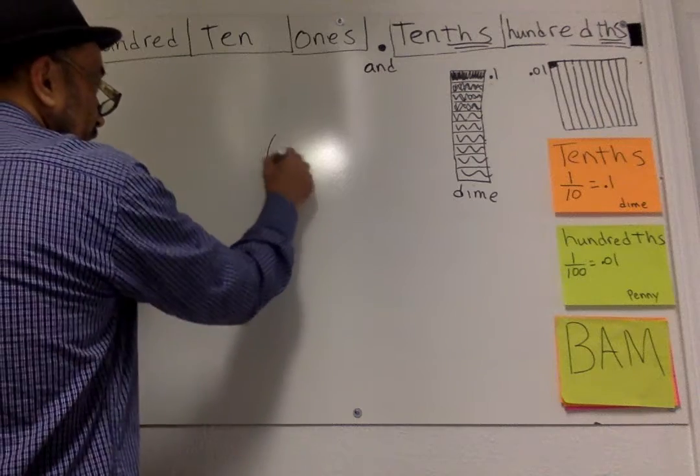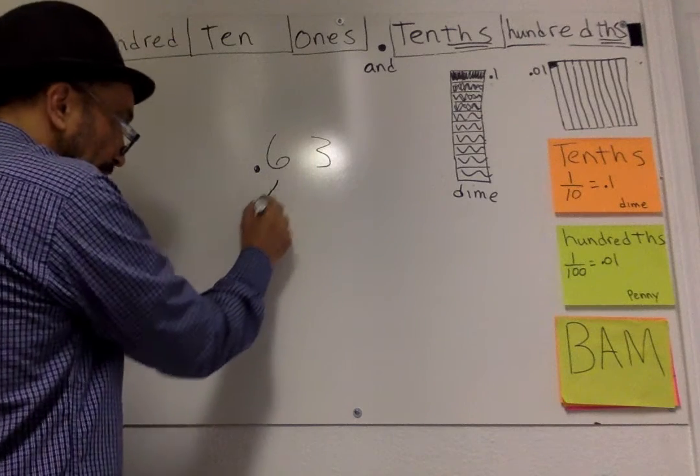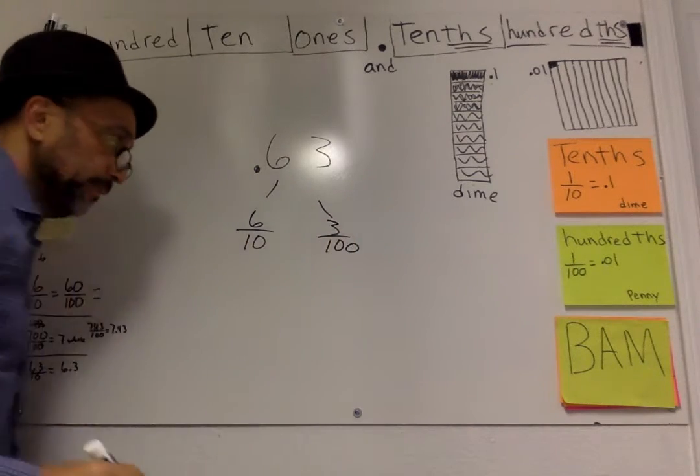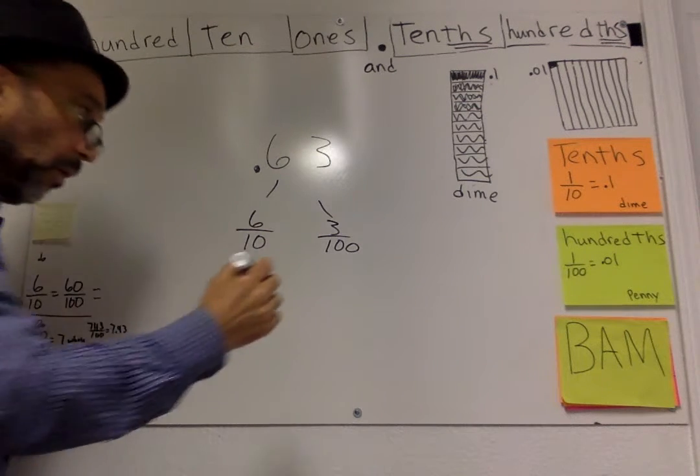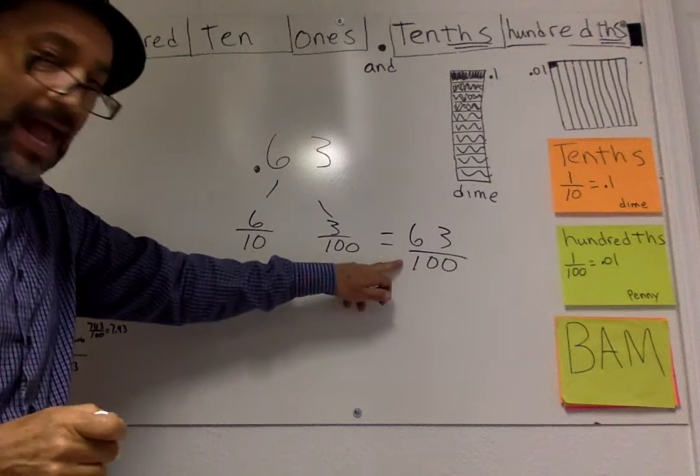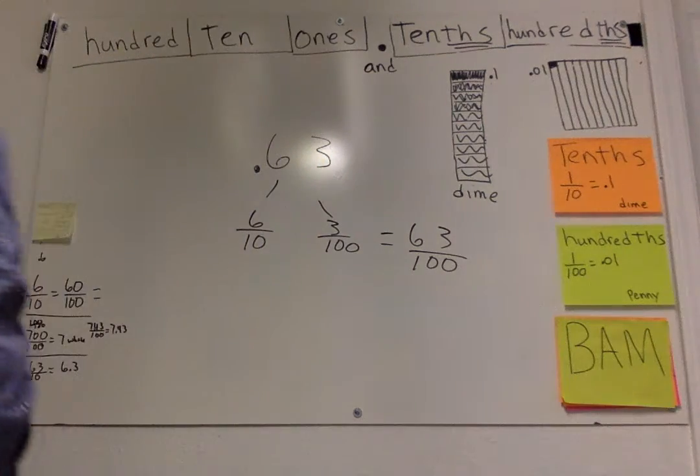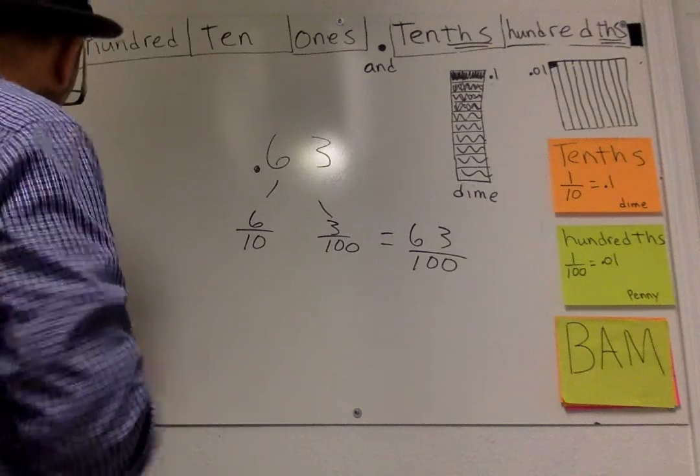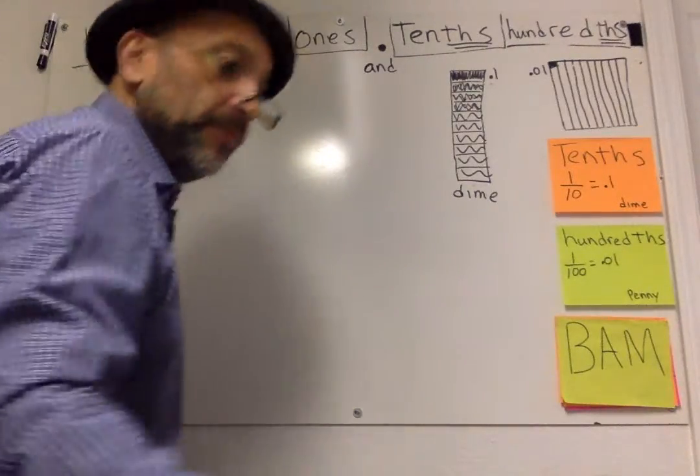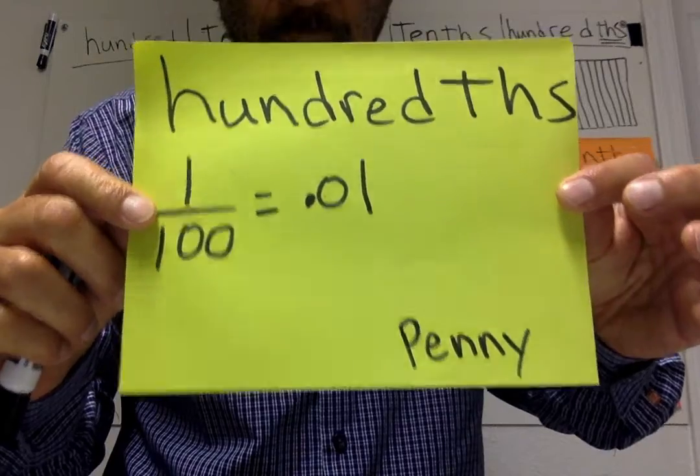So, for example, if you have .63, right, .63. What do you have? You can have six tenths and three hundredths, right? Or you can have 63 hundredths, 63 pennies out of a hundred, okay?